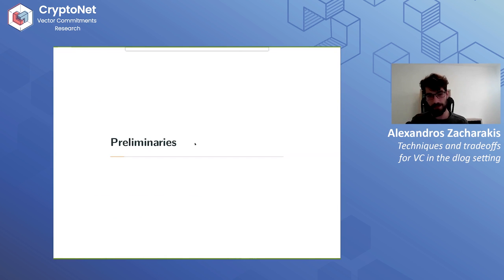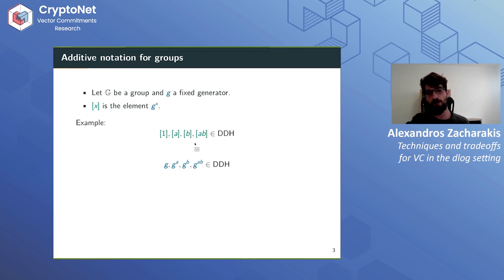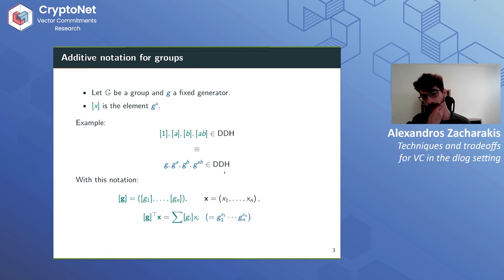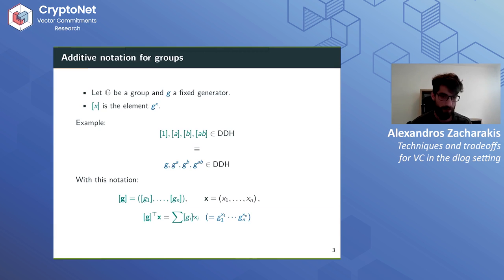Some very few preliminaries to start. We'll go fast through this slide because Russell already explained it in the pairing setting. We just use additive notation for groups, denoting elements g to the x inside brackets. You can see that this is a Diffie-Hellman tuple in this notation. In the discrete logarithm setting, we can write a multi-exponentiation using inner product notation, which makes things cleaner and easier to work with.